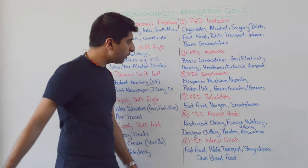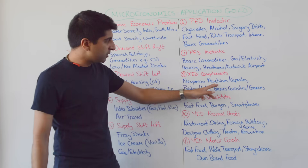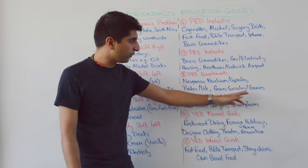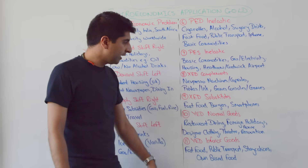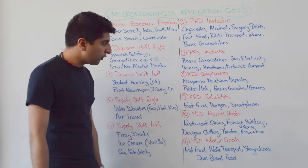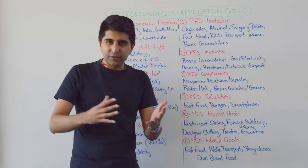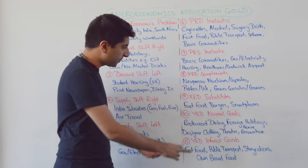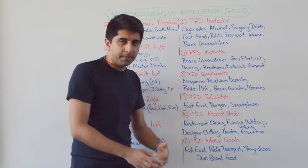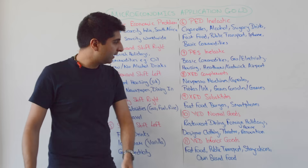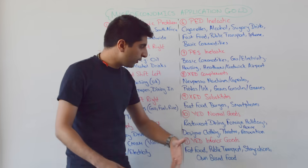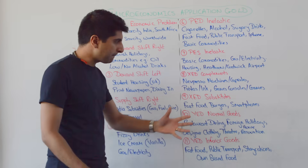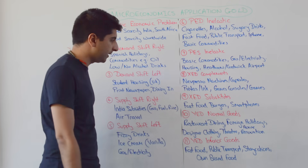Complementary goods: Nespresso machines and the capsules, printers and the ink, games consoles and the games. Substitute goods: any fast food chains you could argue are substitutes, but especially the burgers — Big Mac, Whopper. Smartphones are absolutely massive substitutes.